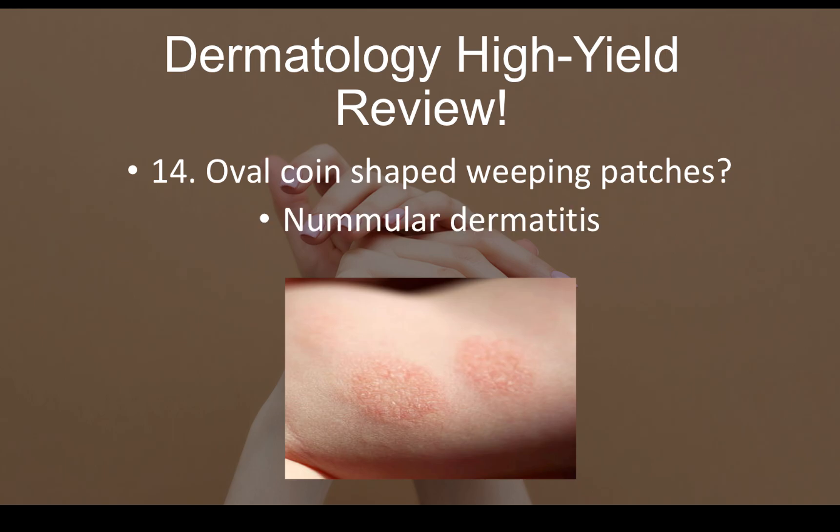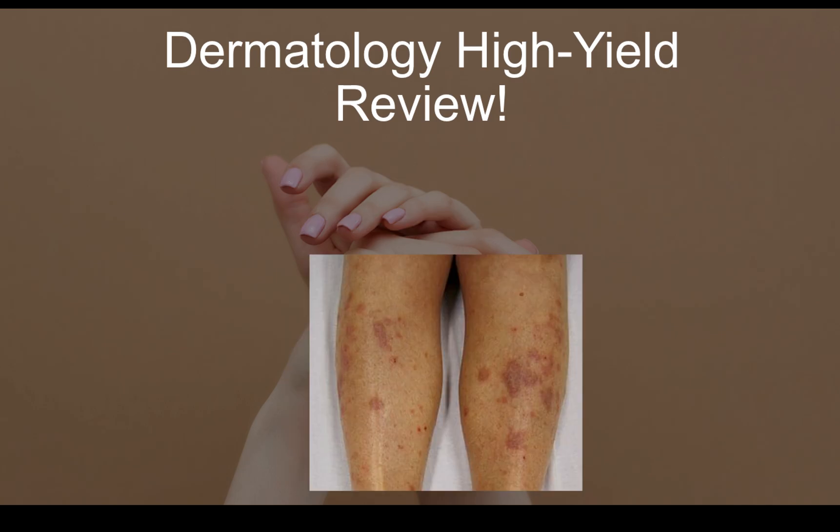Question number fourteen: oval coin-shaped weeping patches are nummular dermatitis. The mnemonic: nummular — think numismatics, coins. Oval coin-shaped patches equal nummular dermatitis.